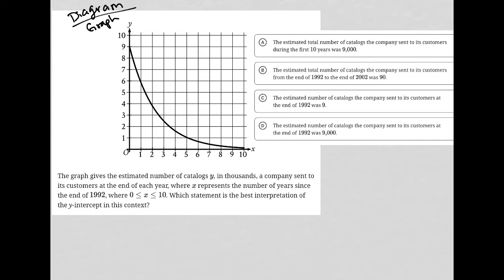I don't see an x-intercept here, but I do see a y-intercept there. It's 9. The question says the graph gives the estimated number of catalogs, y, in thousands, a company sent to its customers at the end of each year. So the y-axis is number of catalogs, and we're told that is in thousands. All of those numbers along the y-axis are actually thousands.